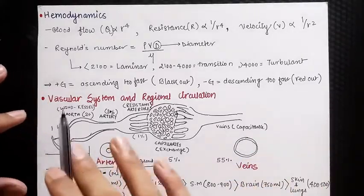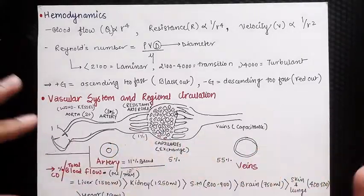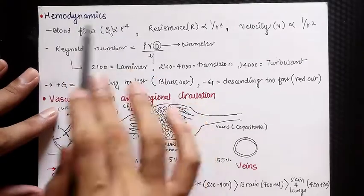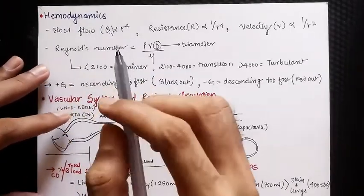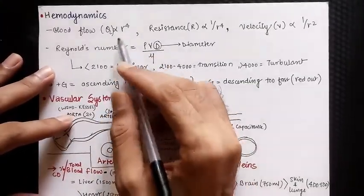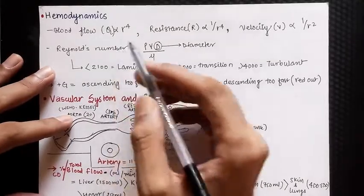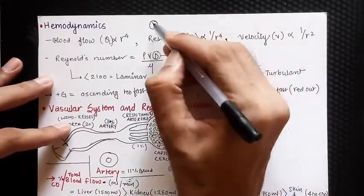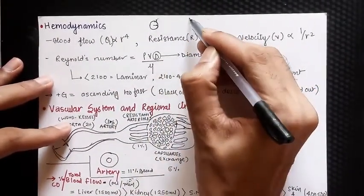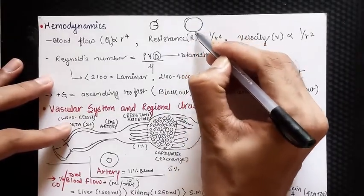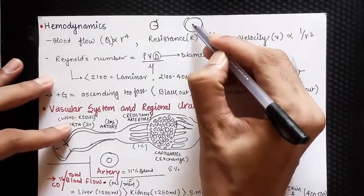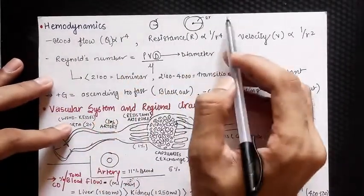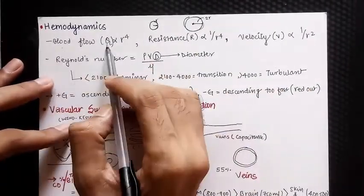Let's talk about important facts related to the cardiovascular system. First is hemodynamics. Blood flow is directly proportional to the fourth power of the radius of the blood vessel. Suppose this is a blood vessel with radius r and another with radius 2r — when the radius is doubled, the blood flow will be 16 times the normal blood flow.